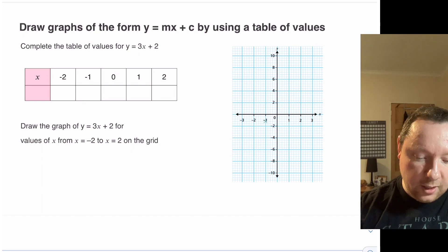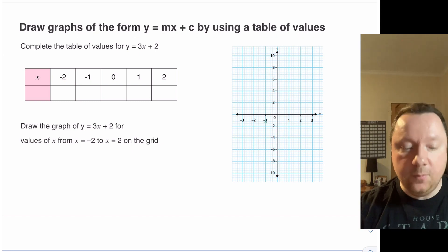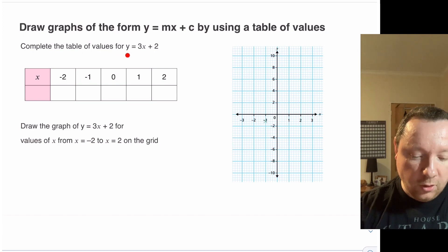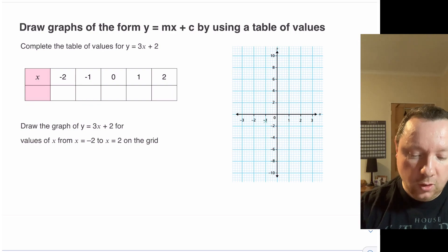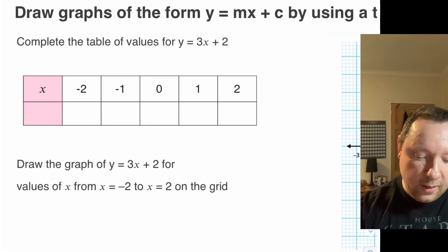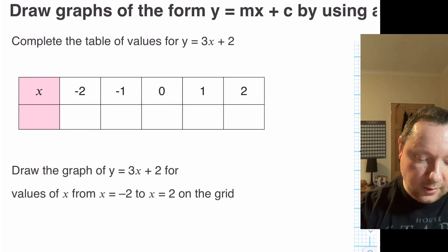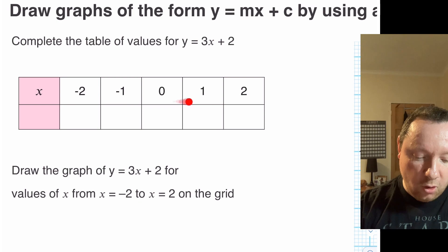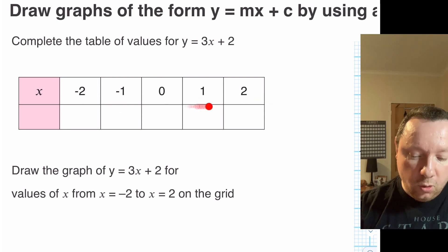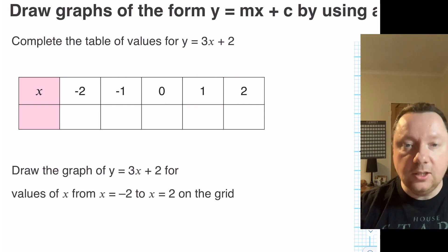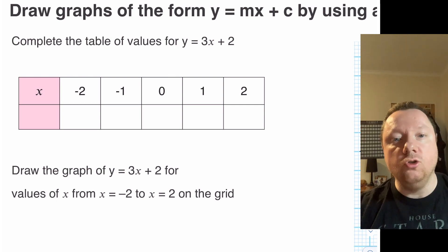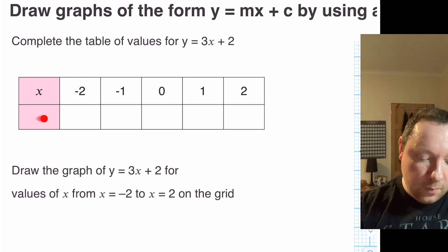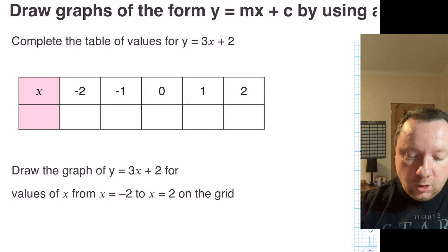So our first example says complete the table of values for y = 3x + 2. I'm just going to zoom into this table a little bit so we can see it better. You'll notice I've drawn a table with an x on the top and a bunch of numbers. I've just chosen these numbers for convenience to draw a graph — I could have chosen any numbers for x — but we need to work out our bottom row, which will be our y.